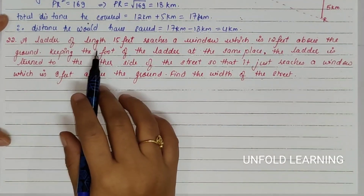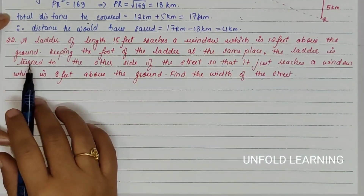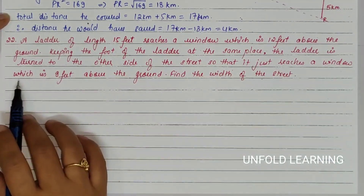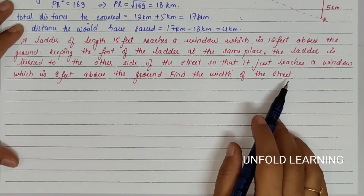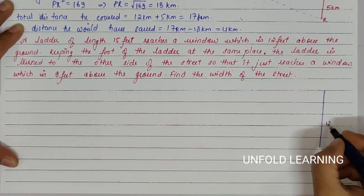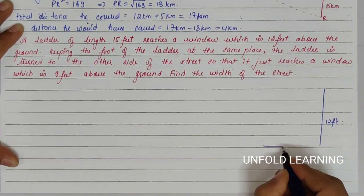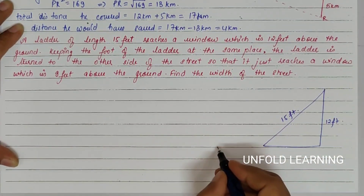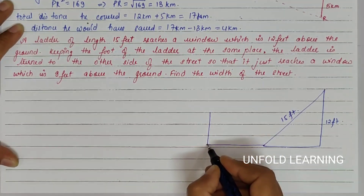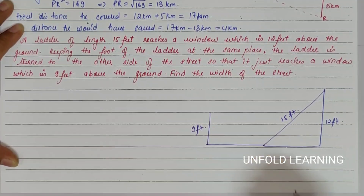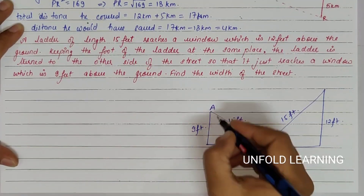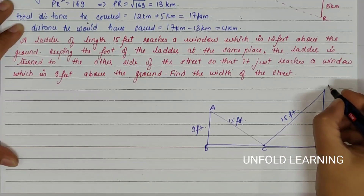Question Number 22. A ladder of length 15 feet reaches a window which is 12 feet above the ground. Keeping the foot of the ladder at the same place, the ladder is turned to the other side of the street so that it just reaches a window which is 9 feet above the ground. Find the width of the street. Here there is a window 12 feet above the ground and the ladder is 15 feet in length. Moving the ladder to the other side which has a height of 9 feet. Marking the points as A, B, C, D, and E.